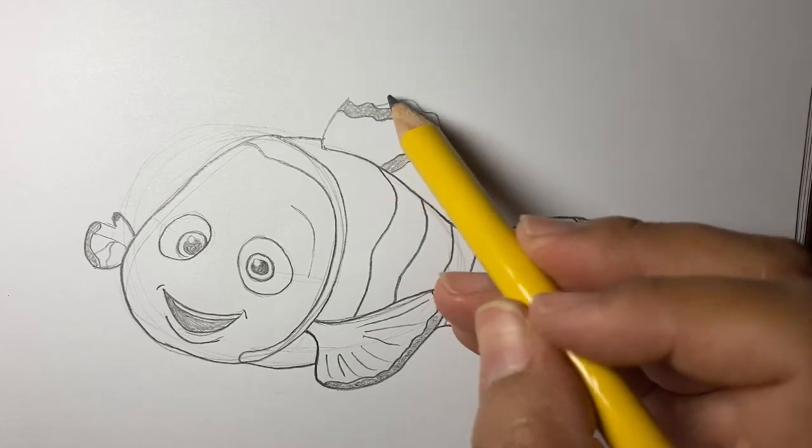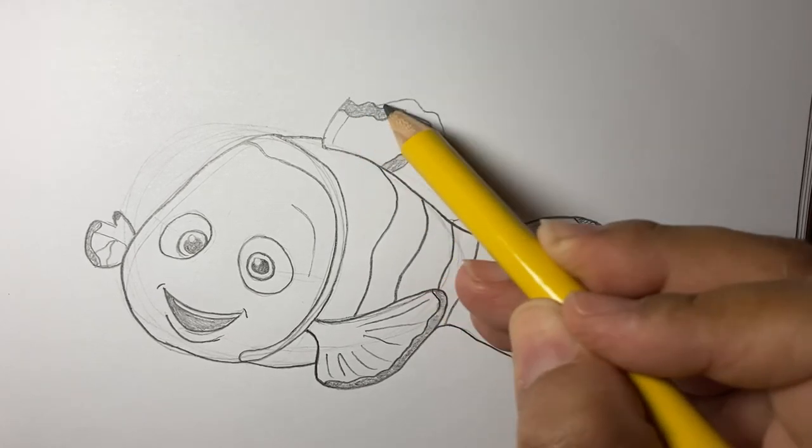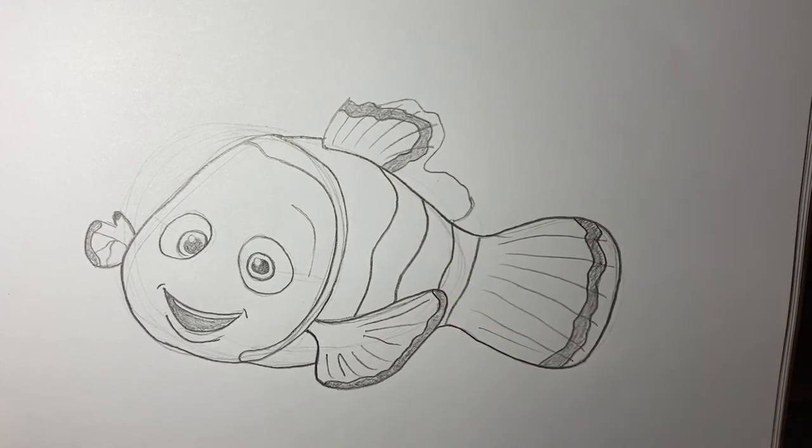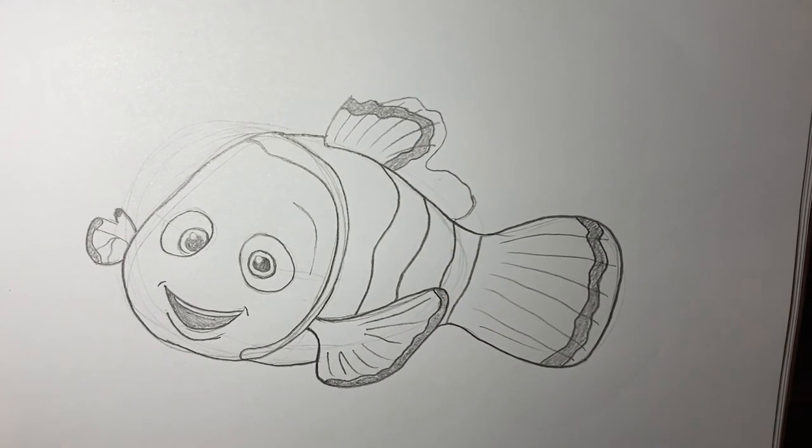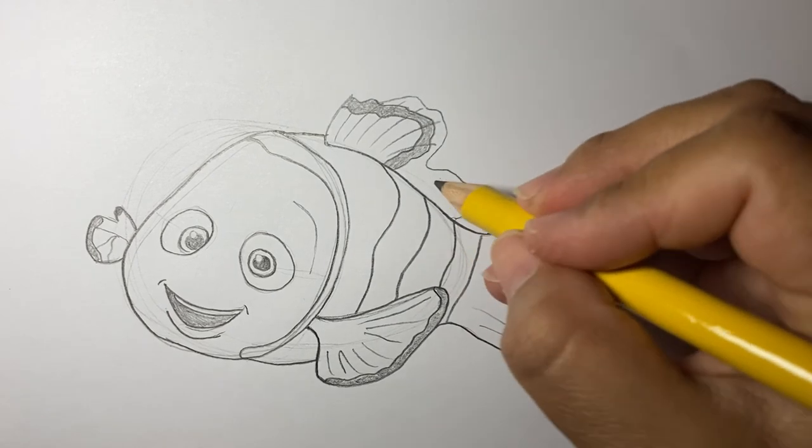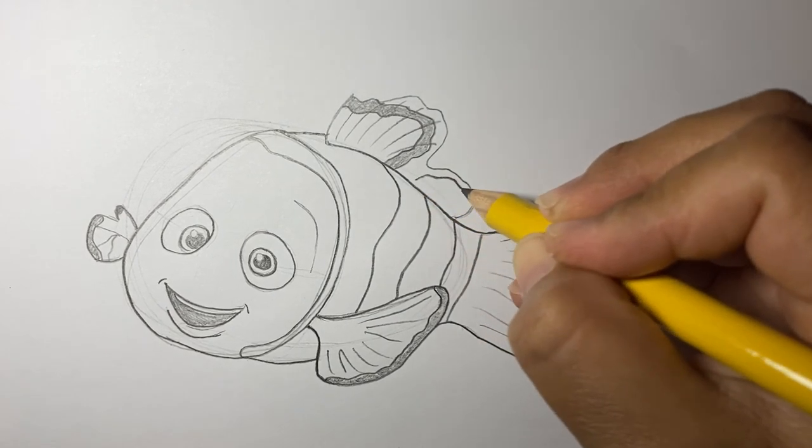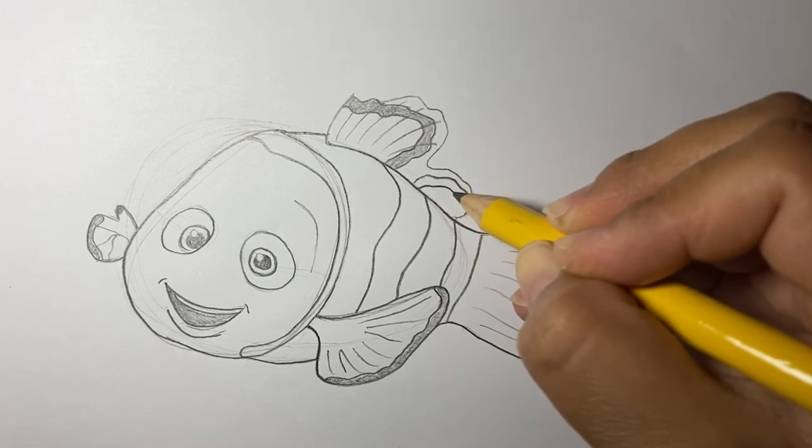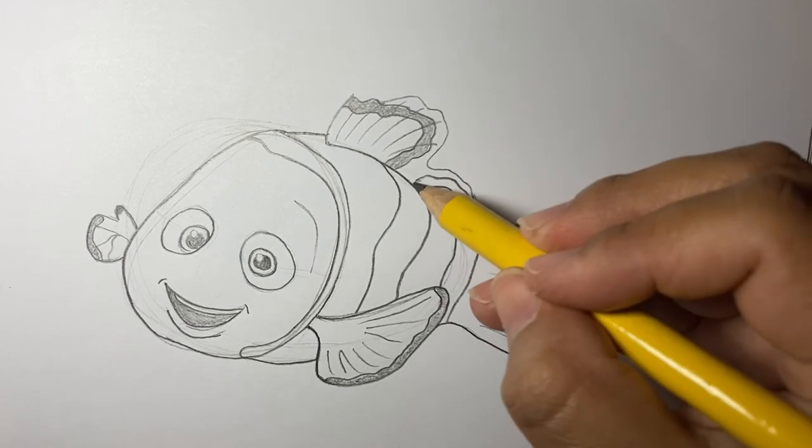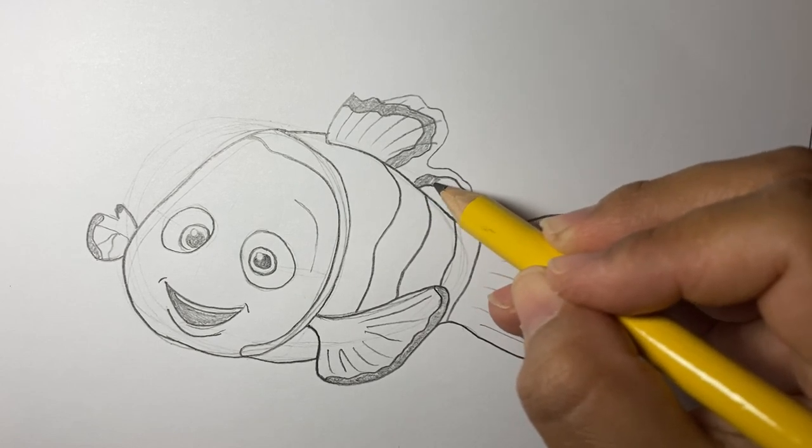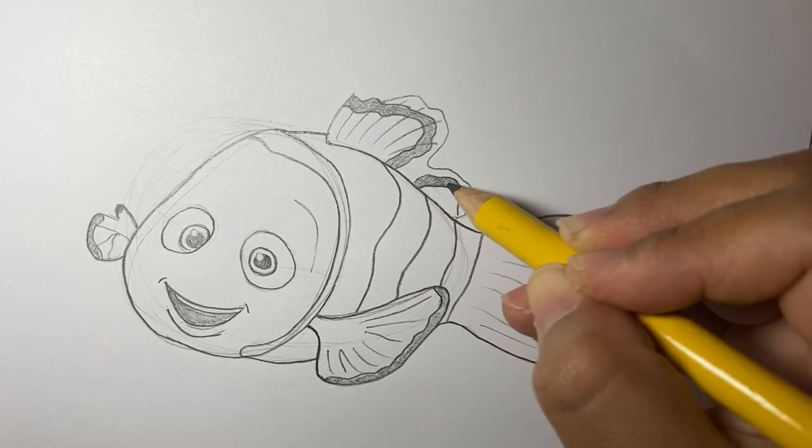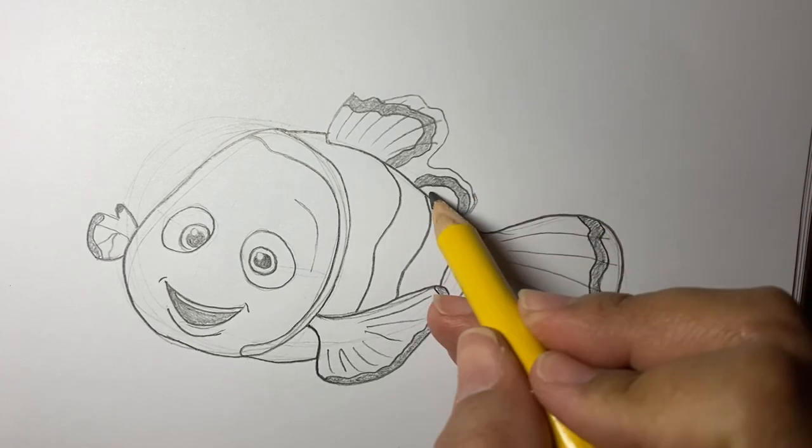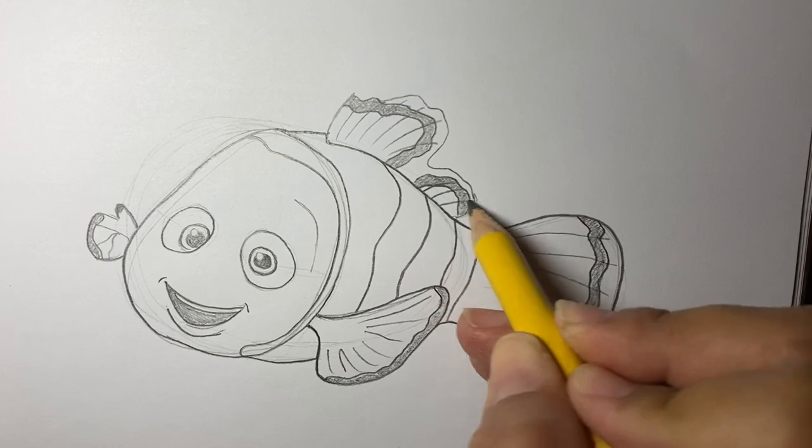And then we're also going to have those cool fin lines. I'm going to do one more of those black spots and then color in. And then those little fin lines.